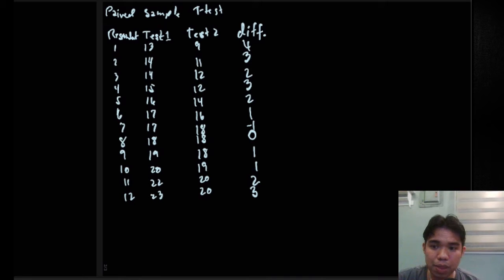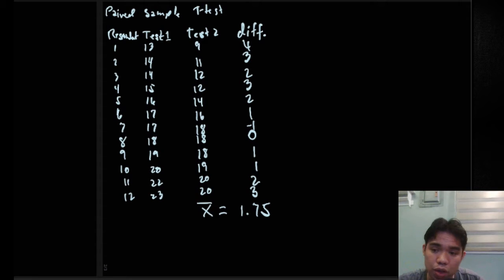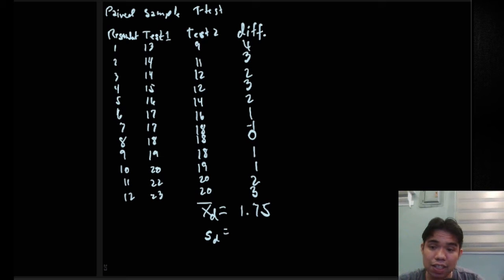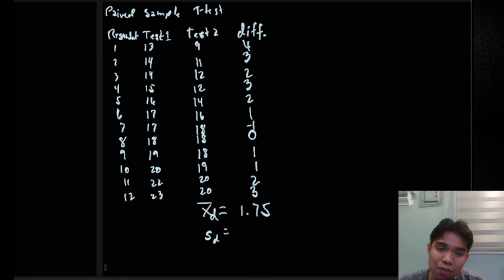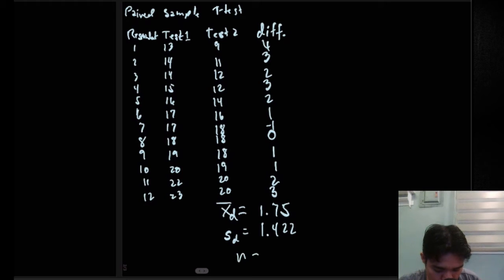The mean of the difference, denoted with subscript D, is 1.75 — obtained by summing all 12 difference values and dividing by 12. The standard deviation of the difference, also with subscript D to emphasize it comes from the difference column rather than the raw Test 1 or Test 2 data, is 1.422. These values, along with n = 12, are the three quantities needed for our formula.